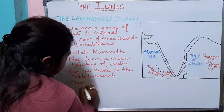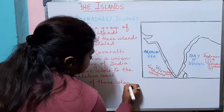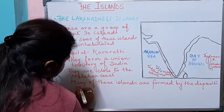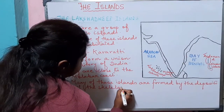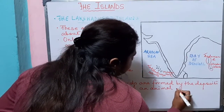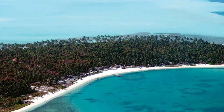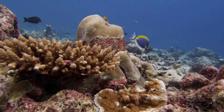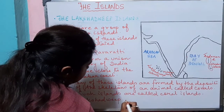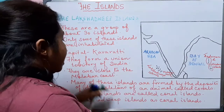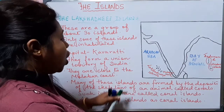Many of these islands are formed by the deposits of the skeletons of an animal called corals, and such islands are called coral islands. So we can call the Lakshadweep Islands as coral islands, because they are formed by the deposits of coral skeletons.